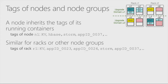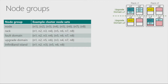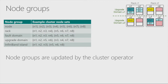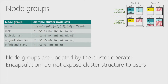A second notion we are introducing is node groups — groups of nodes defined by the cluster operator. By default you have nodes and racks, but you can also define fault domains, upgrade domains for nodes upgraded at the same time, or even a network bad island. These are added and updated by cluster operators. This is also important for achieving encapsulation — we don't expose the underlying cluster infrastructure to users.